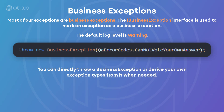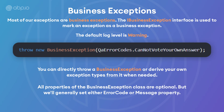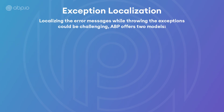You can either directly throw a business exception or derive your own exception types from it when you need it. All the properties of the business exception class are optional, but you'll generally set either the error codes or the message properties. Localizing error messages while throwing exceptions can be challenging. ABP offers two models and their variants.